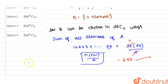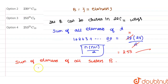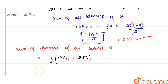Now we find the sum of elements of all subsets of B. That is equal to C(22,11) × 253, divided by 2. If we simplify this term, we get 22! divided by (11! × 11!), into 253 divided by 2.